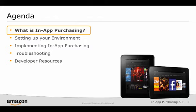First, we'll cover the basic concepts of the In-App Purchasing API, including the types of items you can sell to customers. Next, we'll do a step-by-step walkthrough of how to submit In-App items, or SKUs, to the developer portal, set up your environment to implement In-App Purchasing in your app, and test your implementation with SDK Tester and the RVS Sandbox. Finally, we'll cover some troubleshooting tips and where to go for more information.